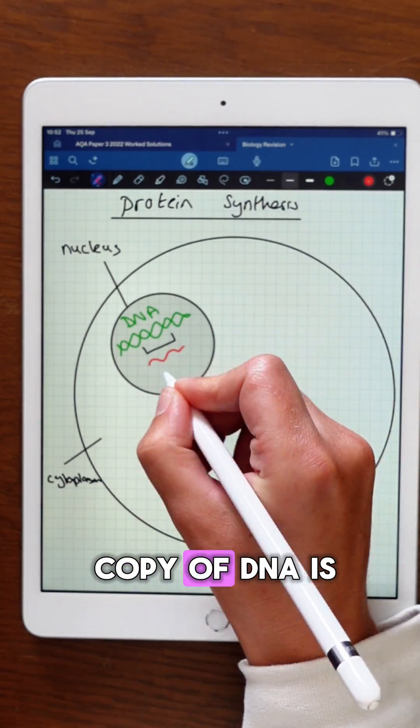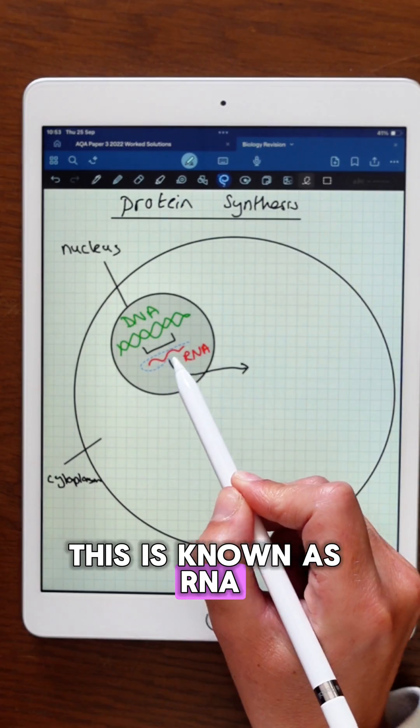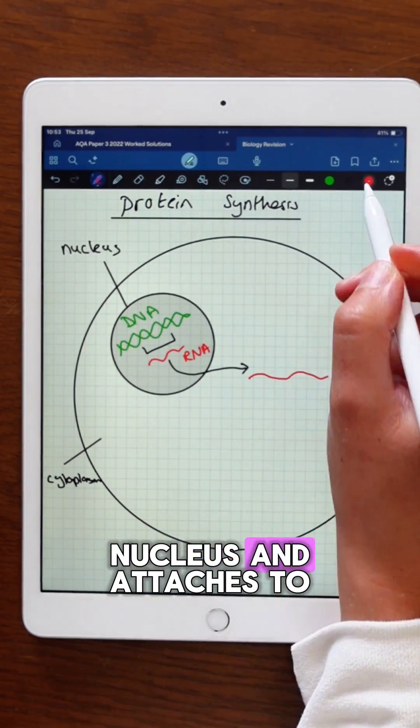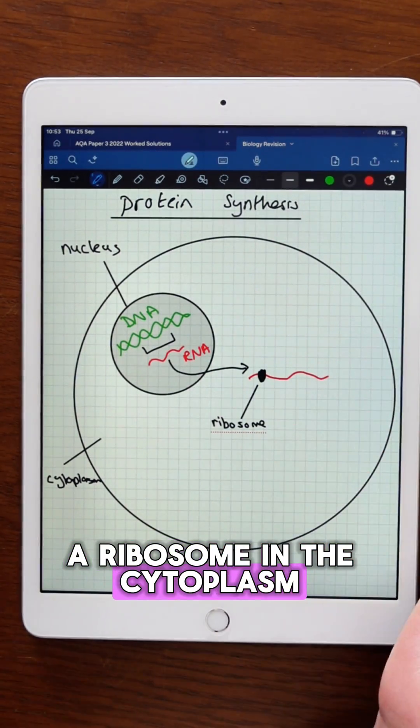Number one, a copy of DNA is made in the nucleus. This is known as RNA. The RNA leaves the nucleus and attaches to a ribosome in the cytoplasm.